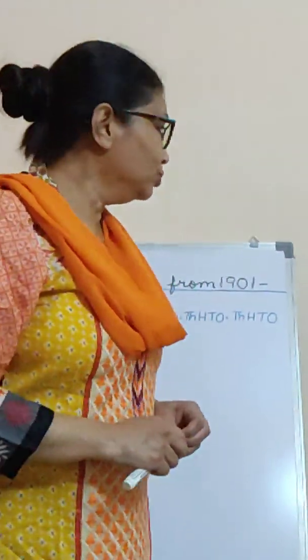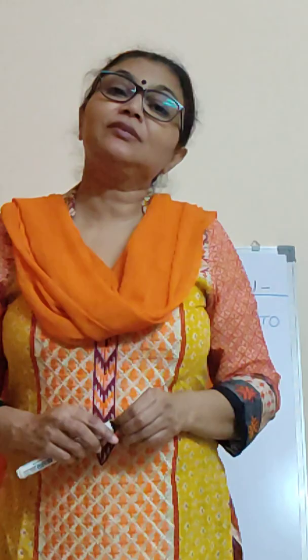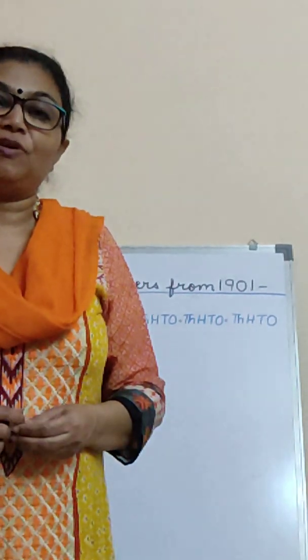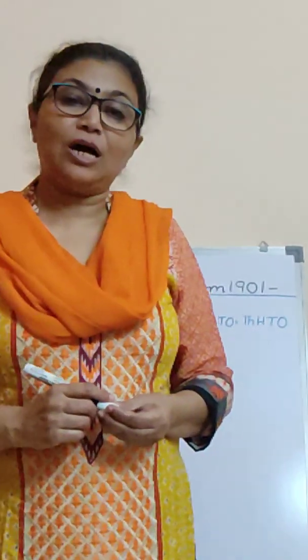Hello students, once again welcome back and I hope you all are safe and doing well at home, eating well and staying healthy and not troubling your mummies and also washing your hands regularly. Last time in maths we did our numbers till 1900. Now today we are going to write numbers from 1901 to 2000, and with this we finish our numbers. We have learnt numbers from 1001 to 2000.